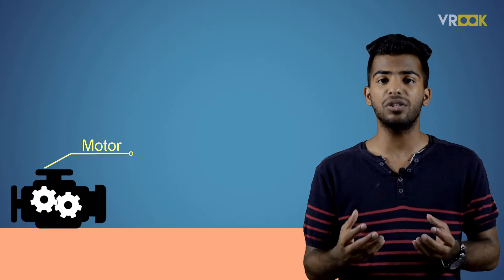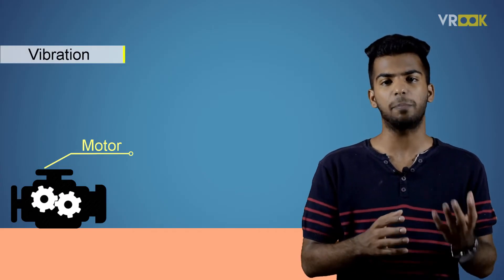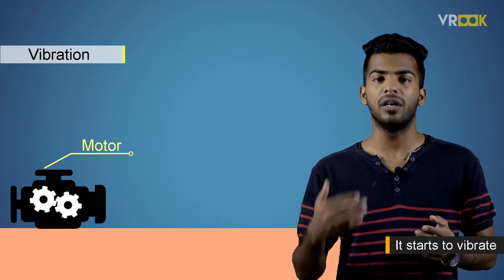Another simple example we observe often is the vibration of some objects. If the motor is running at a high speed, it starts to vibrate vigorously.